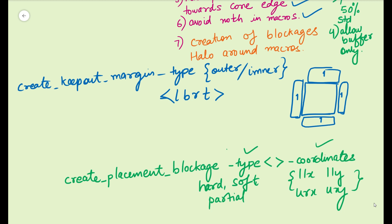This is logical. But if you specify coordinates for a blockage and then move your cells, the blockage will not move — it stays fixed at the specified coordinates. The keep out margin, however, moves with the cell. So the next question is: what is a halo? Halo is nothing but the keep out margin. Some companies call it halo and some call it keep out margin, but both are the same. Halo is also logical, while placement blockages are physical.